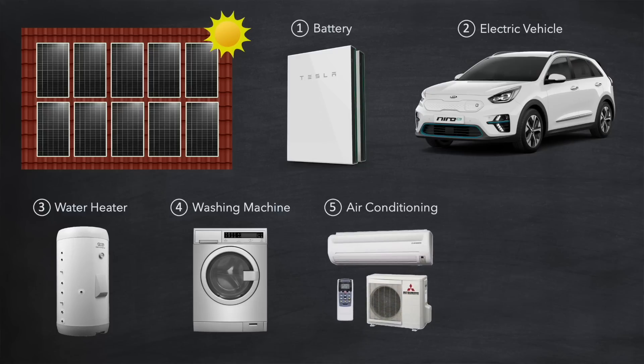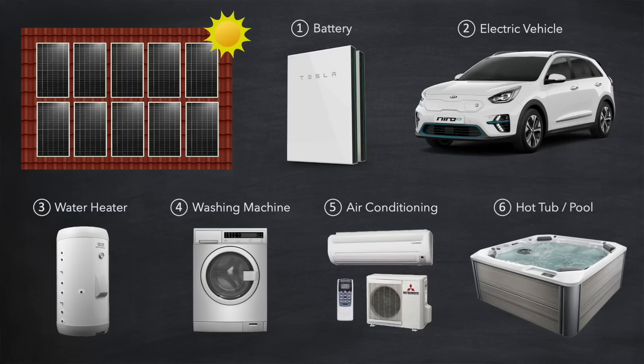Air conditioning systems are perfect for solar excess. They are generally running when the sun is shining. And many people with solar are considering adding AC to their properties because of this. And finally, if you own a hot tub or pool, using excess solar is a great way to keep those at temperature.